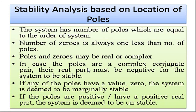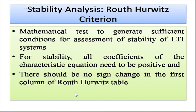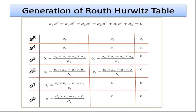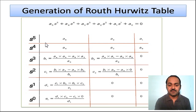If poles have a positive real part, the system is unstable. Next, we look at stability analysis using the Routh-Hurwitz criteria — a mathematical test that generates sufficient conditions for stability of linear time-invariant systems. For stability, all coefficients of the characteristic equation must be positive and there should be no sign change in the first column of the Routh-Hurwitz table.